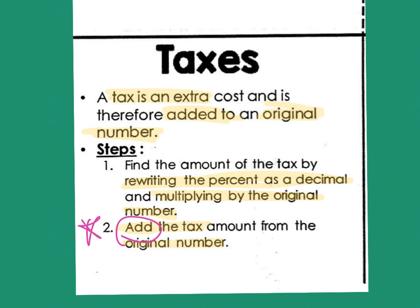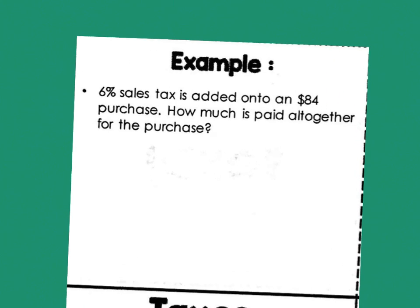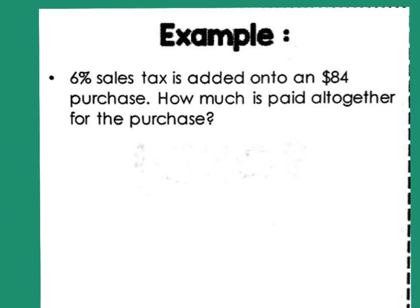Look up here at the top, at the actual example, my important information. This says that I have a 6% sales tax. When I'm shopping, I bought $84 worth of a purchase. And I want to know how much is paid all together. So going back through those steps...